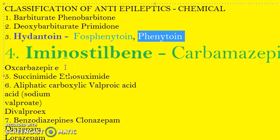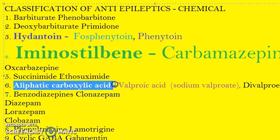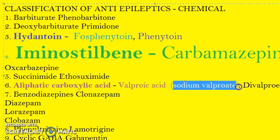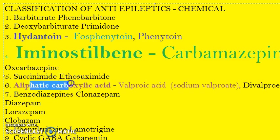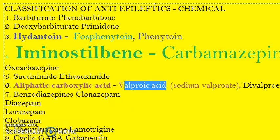Phenytoin is only a prototype. Next, you should know valproic acid — this is an aliphatic carboxylic acid, also called sodium valproate. Valproic acid is the first line of drug for absence seizures and myoclonic seizures. Absence seizures is also called petit mal epilepsy.